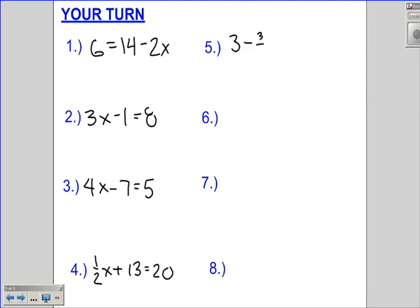Number 5 is 3 minus 3 over 4x equals negative 6. Number 6 is 1 third x minus 5 equals negative 1. Number 7 is 5x minus 4x plus 1 equals negative 12.